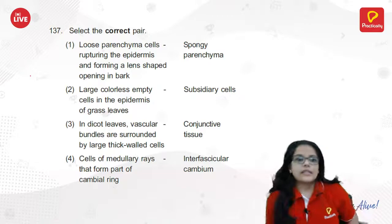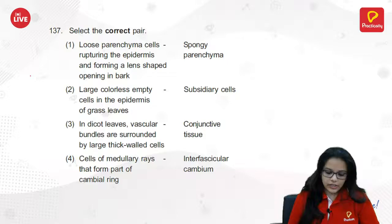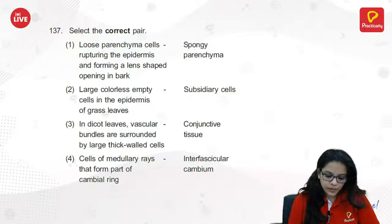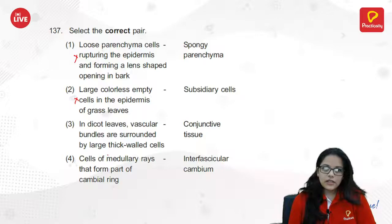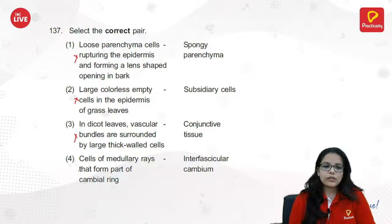Select the correct pair: spongy parenchyma with loose parenchyma cells — not correct. Large subsidiary cells — large colorless empty cells in the epidermis of grass leaves — not really. Vascular bundles found in both monocot and dicot leaves — not exclusively correct. Interfascicular cambium cells of medullary rays that form part of the cambial ring — the answer is 4.